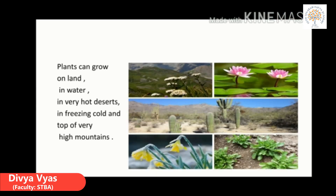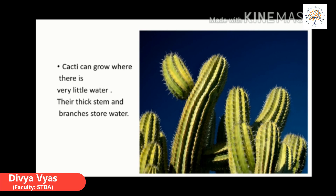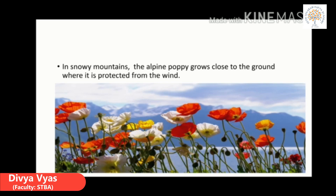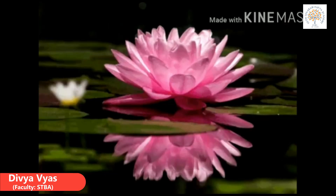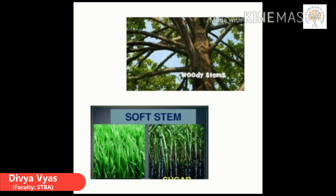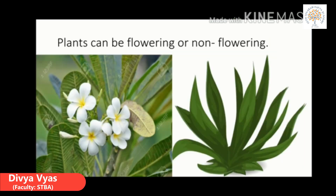Plants can grow on land, in water, in very hot deserts, in freezing cold and on top of very high mountains. For example, Cactus can grow where there is little water and their thick stem and branches store water. In snowy mountains, the alpine poppy grows close to the ground where it is protected from the winds. The lotus grows in water. Plants can have woody stems or soft stems, and plants can be flowering or non-flowering.